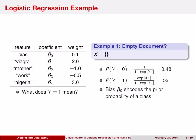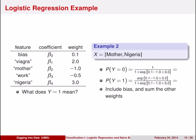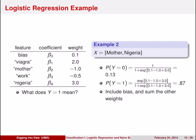Now let's compute the probabilities for a document with two words. Say we have the words 'mother' and 'Nigeria.' When we plug this in, we have 0.1 for the bias term, then we add negative 1 for 'mother,' and then we add 3 for 'Nigeria.' When we compute these values, we get 0.13 for the probability of it being a not-spam email, and probability 0.87 that it is a spam email.